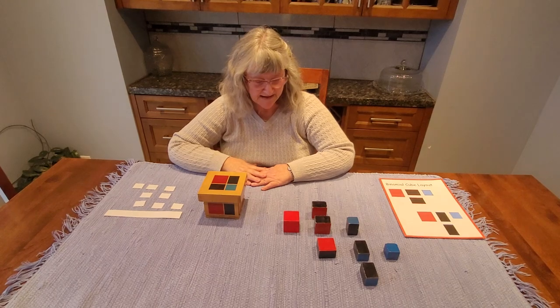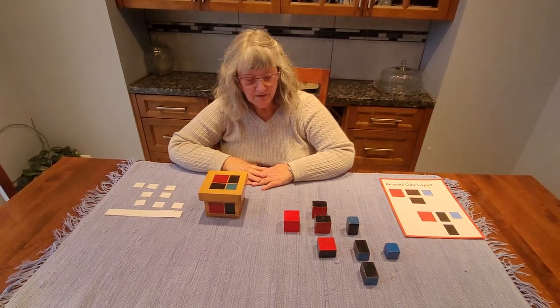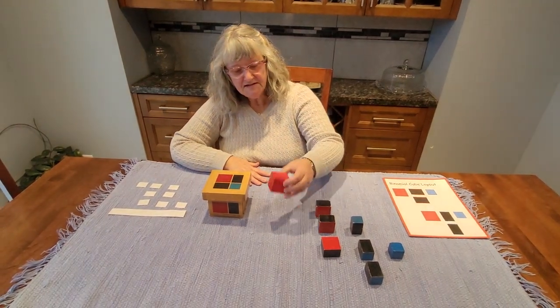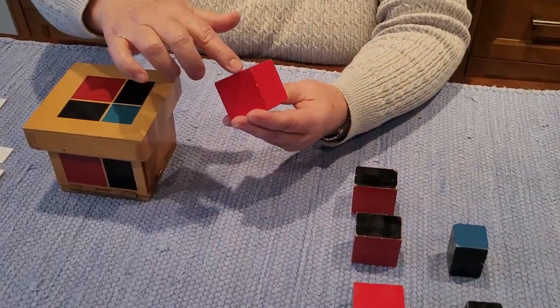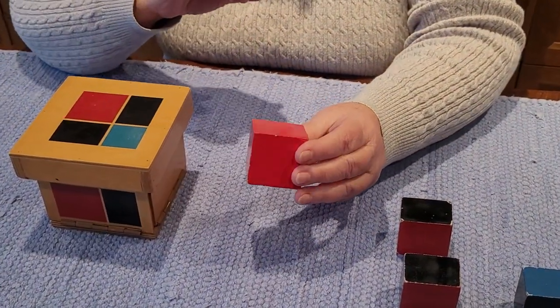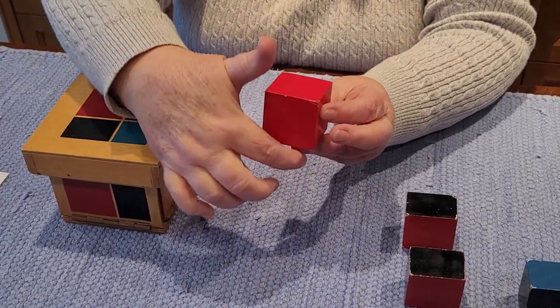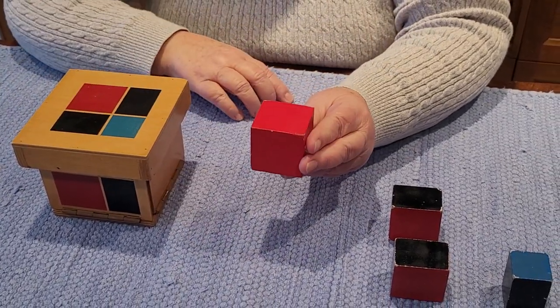I'm going to teach you the names of the binomial cube. We can see that this is a cube. All of the sides are of equal dimensions: the length, the width, and the height. The three dimensions are the same.